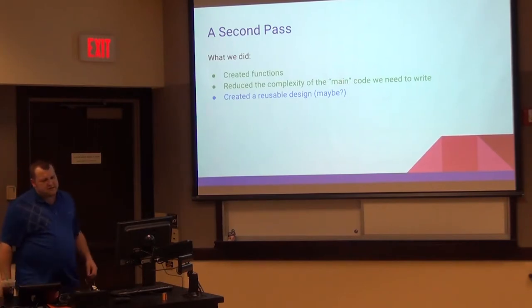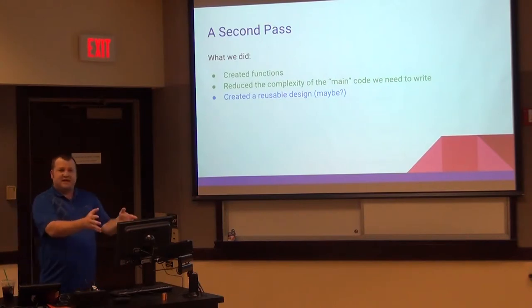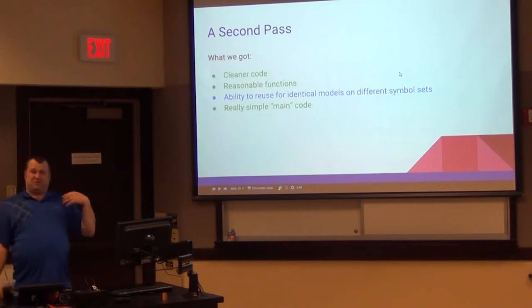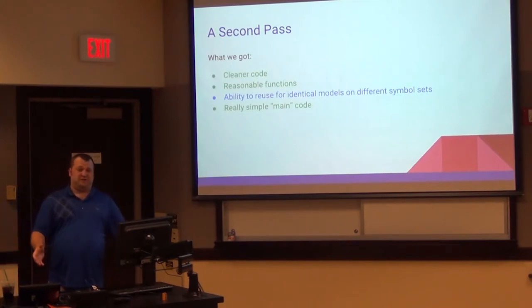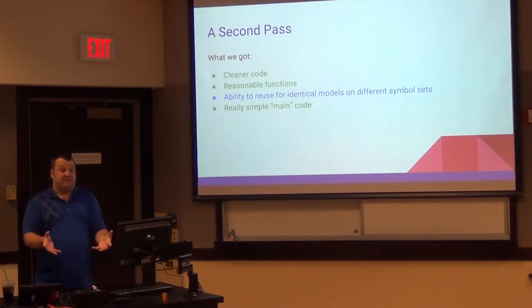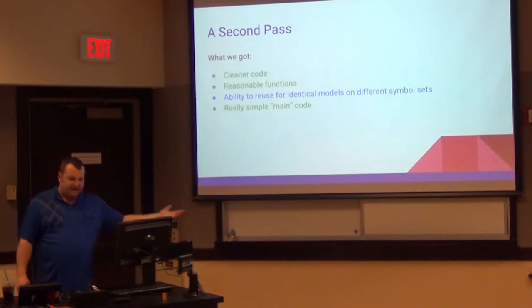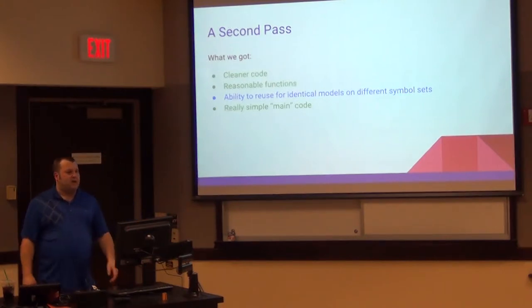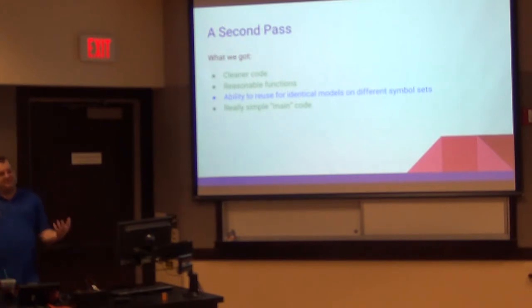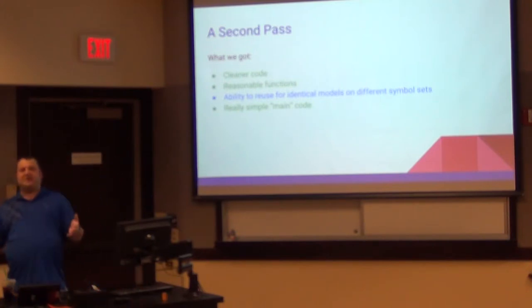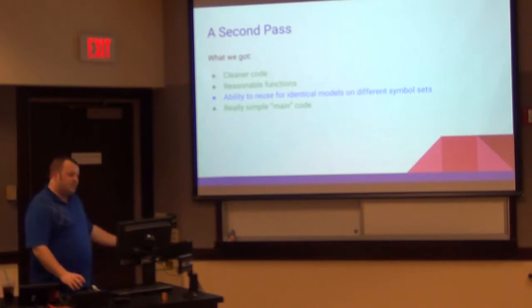Now what did we do? Well we created functions. We created some reasonable functions. Our main code is very very simple. And from that we can use any symbol set to fit any symbol. Right? Because we can simply pass in different drivers and different responders. Did we create a reusable design? Well maybe. And this is kind of the crux of the whole thing. I've been here. I've had this code that does this. What it does is it fits one model. It is a lot cleaner. It has reasonable functions. And we can reuse it for identical models on different symbol sets. But it hides the whole thing from us. It hides our data from us. Because the first question you're going to ask is, what if I did this with the same data? I have the same data set. What if I used a different type of fit? What if I use a quadratic fit? What if I used any number of things? And we don't have that. It hides all it returns to us. We call one function. We get that fit. We do get really really simple main code which is attractive. Now it's okay. It's not bad. But I've been stuck here.